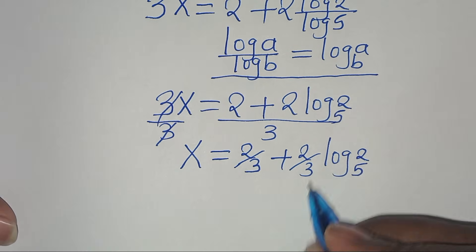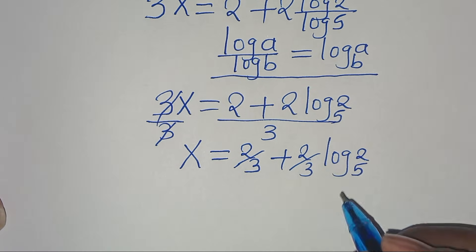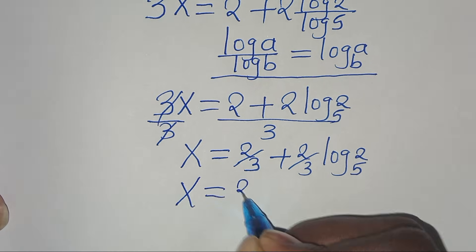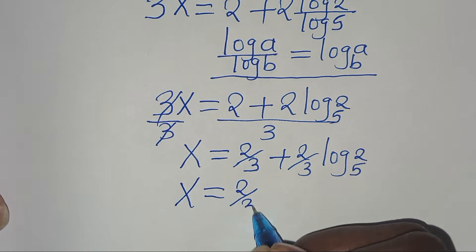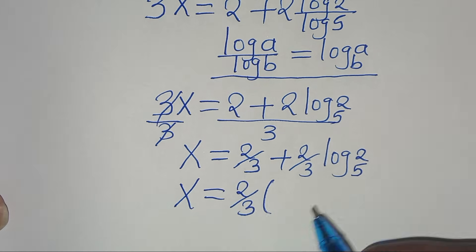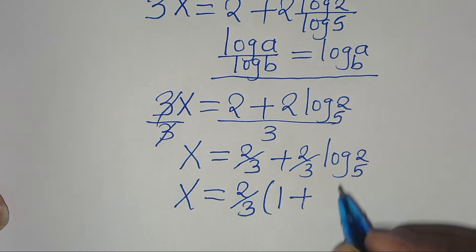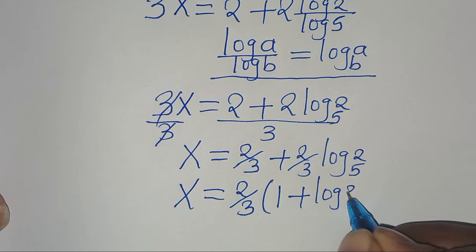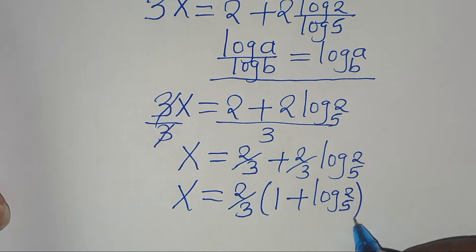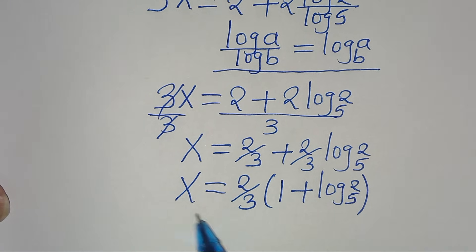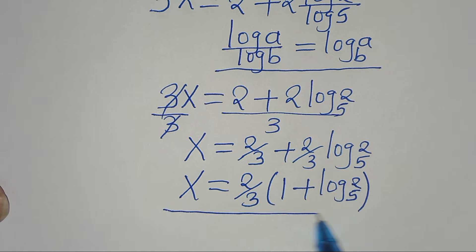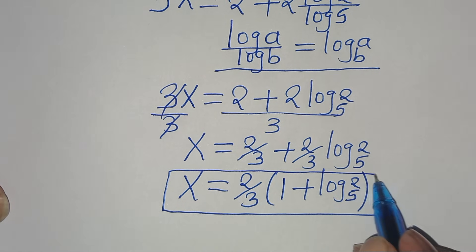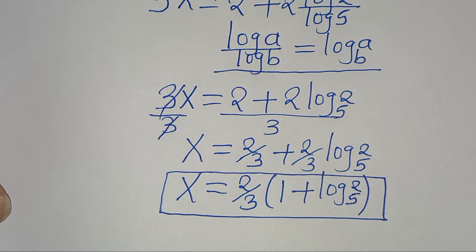Since 2 over 3 is common, we can factor it out: x equals 2 over 3 times the quantity 1 plus log base 5 of 2. This is the value of x. The next step is to verify that this value actually satisfies the equation.